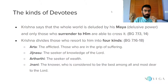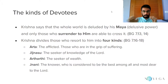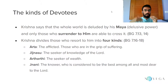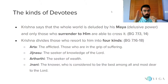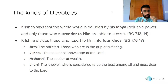The second kind is the Jignyasu Bhakta, who is the seeker of knowledge of the Lord — he is curious and desires to know the Lord. The third is the Artharthi, who is the seeker of wealth; he desires certain things materially and therefore prays to God to have his desires fulfilled. The fourth is the Jnani, who is the knower of the Lord, who knows the Lord in his reality. This Jnani is considered the best among all the Bhaktas by the Lord himself, and also the most dear to the Lord.